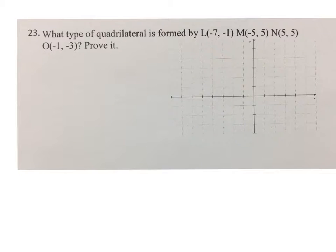We are given a quadrilateral that's formed by four points on a grid and we're asked to show what type of quadrilateral it is. So we start by plotting L at negative 7, negative 1.